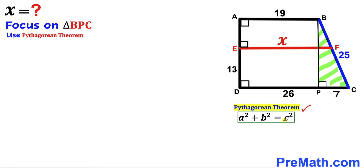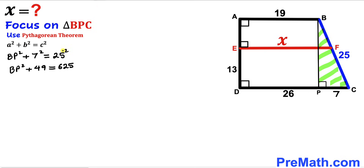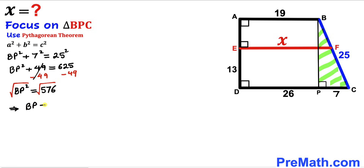Here's the Pythagorean theorem: A² + B² = C². In our case the hypotenuse is 25, while the two legs are 7 and the unknown BP. So we get BP² + 7² = 25². Subtracting 49 from both sides, BP² equals 576. Taking the square root of both sides, BP turns out to be positive 24 units.